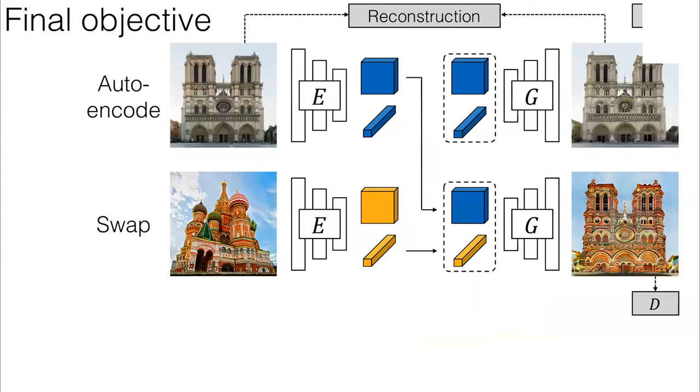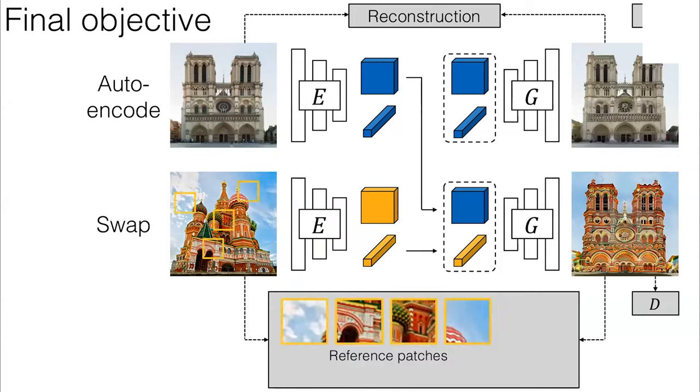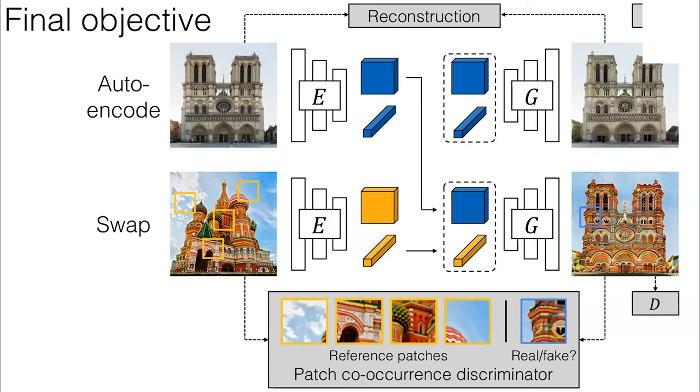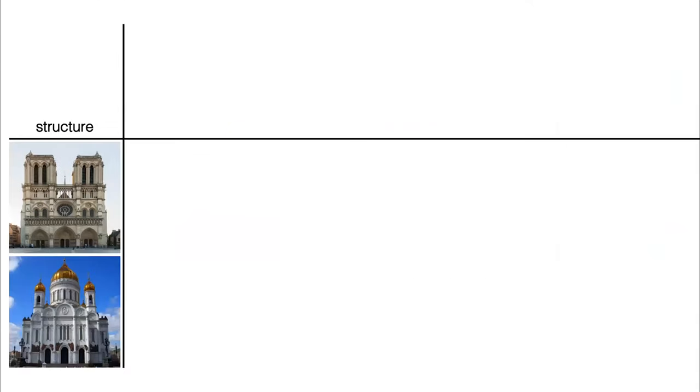One implementation detail that we found important is that we're not actually grabbing just a single patch. We're going to grab several patches from the reference style photo, and then check if a patch on the output actually belongs there. We have multiple context patches to get a distribution over textures from the input image, and we're defining that as what we refer to as style. We call this a patch co-occurrence discriminator. It's looking to see if orderless patches belong in the same image or not.